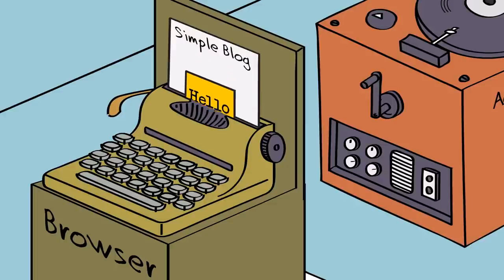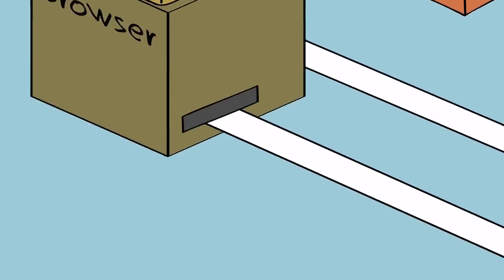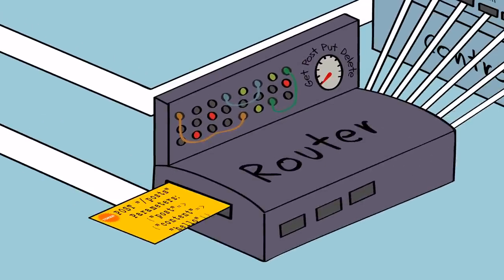The user fills in the fields and hits a button to submit the data as an HTTP card to the blog machine. The card travels through the intertubes and is received by the blog machine's router.